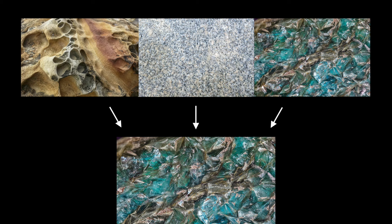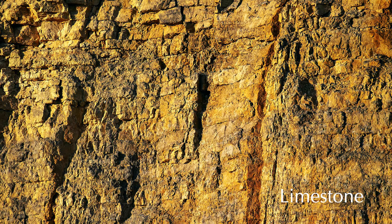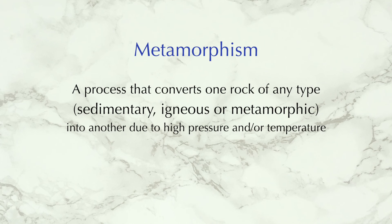The most basic certain fact we know about them is that they are generated from pre-existing rocks. That is, one rock of any type is transformed into another rock. For instance, the sedimentary rock limestone can be transformed into the metamorphic rock marble. Any type of rock, whether it's sedimentary, igneous or metamorphic, can undergo this process under certain conditions. We call the process metamorphism — changing form.